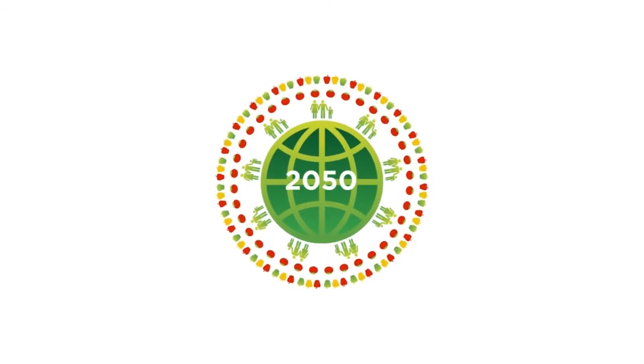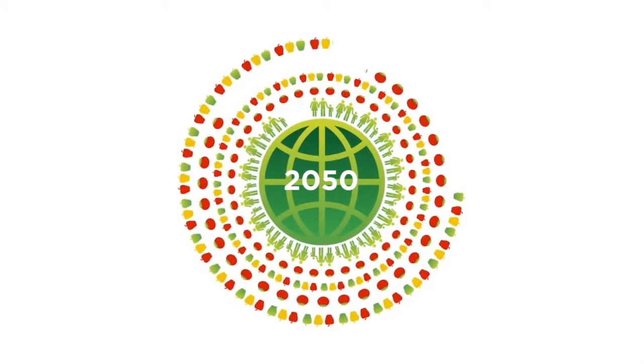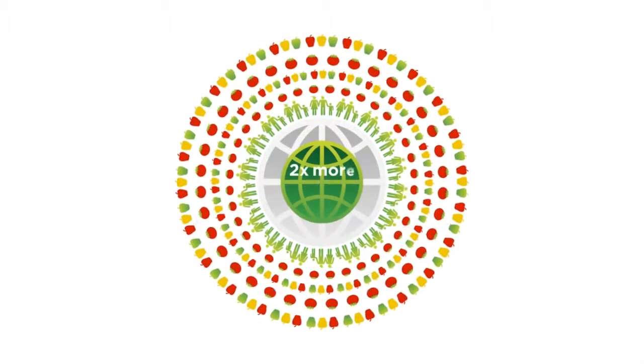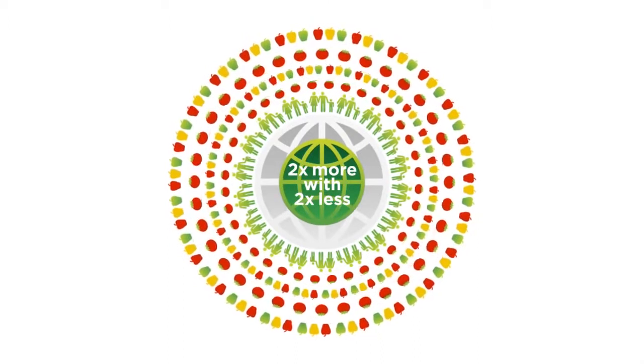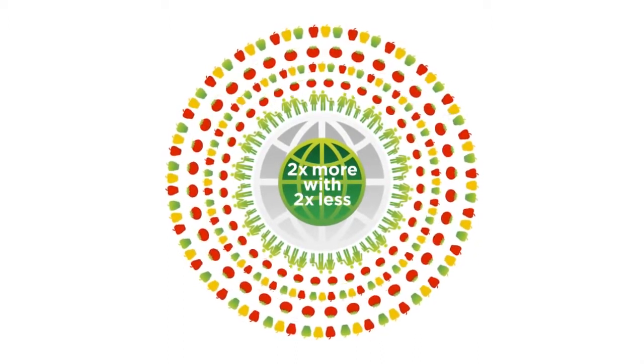To give you an example, in 2050 we will need double the amount of food that we need now, but it will have to be produced with half the resources we use now. So we have to be able to do more using less and in a better way.